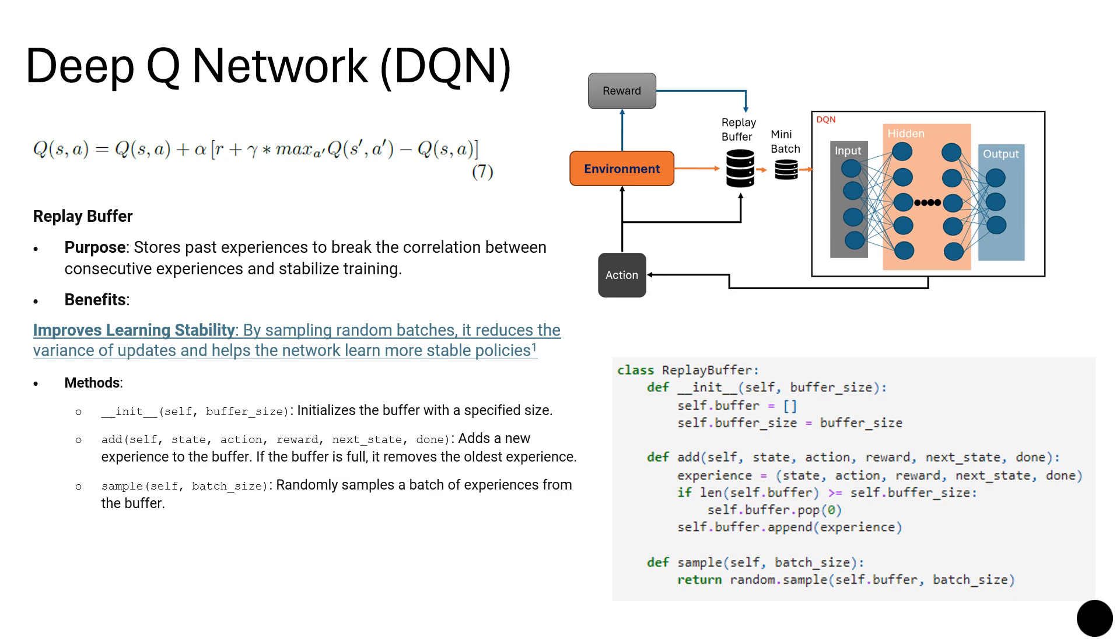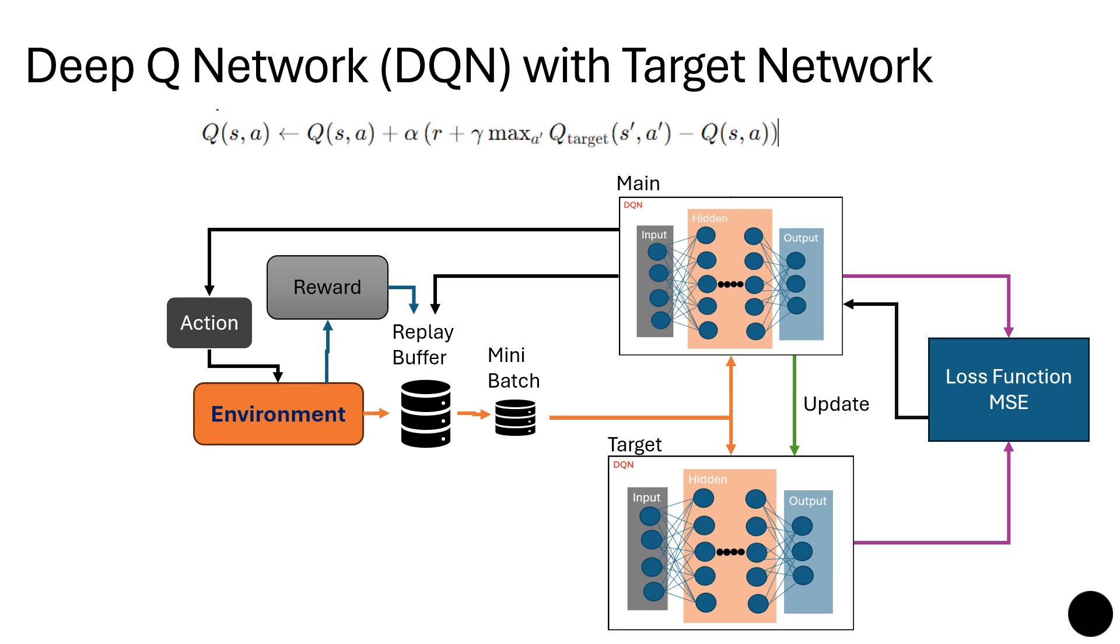Then we have the sample function that takes care of the random samples and batch of those experiences. After this, we move to more complex designs to improve the outcome of DQ learning with the target network. Now we have two networks: the main and the target. The target network is characterized as a copy of the main which is updated with a frequency. This frequency could be low or high depending on your experiments or investigations or design or solution.